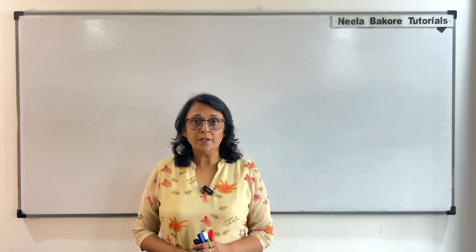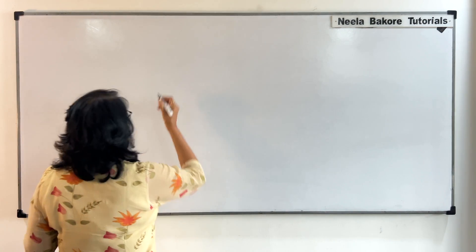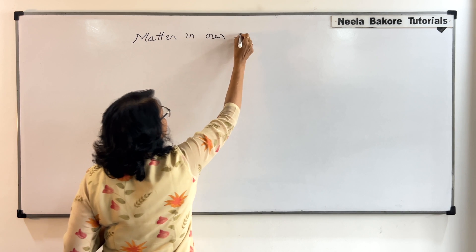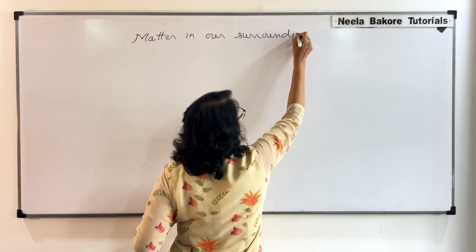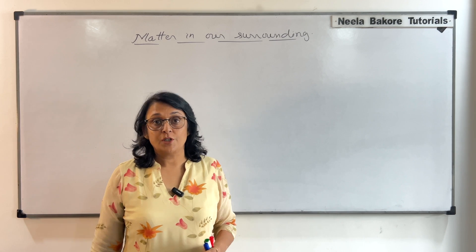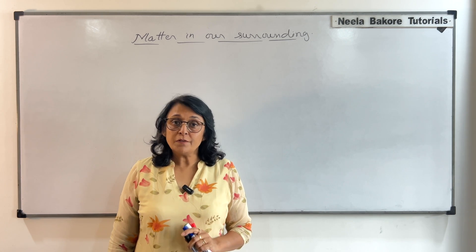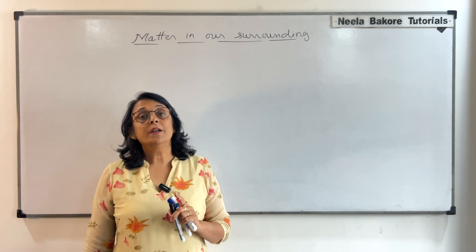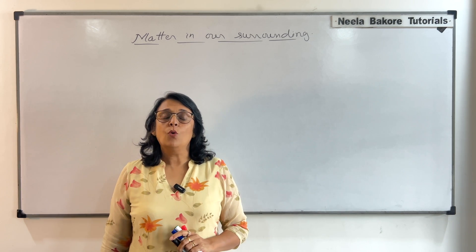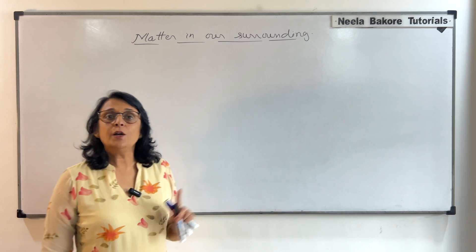We are starting with the first chapter of science for class 9th, and the chapter is 'Matter in Our Surroundings.' I'm sure you've downloaded the notes of this chapter from the website. Those who have not downloaded yet can go to the website — the link is given in the description. You can also find worksheets to practice, and these notes and worksheets can be printed. So let us start with the definition first.